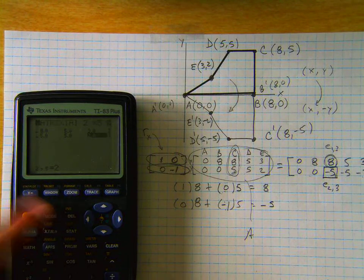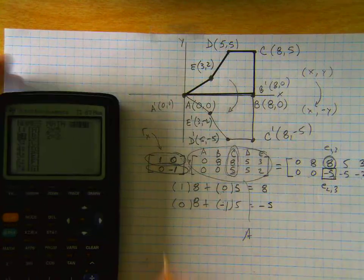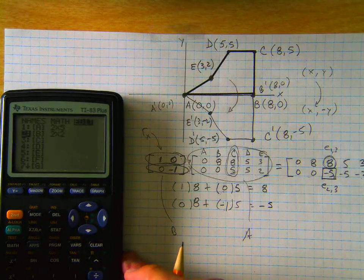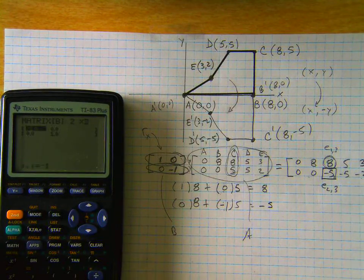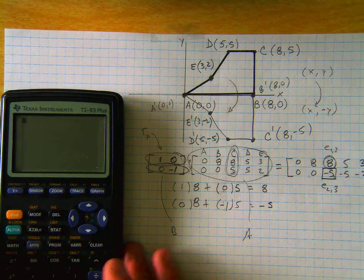And then I'm going to go into matrix and edit matrix B. Our reflection over the x-axis is going to be matrix B, and we want 1, 0, 0, negative 1. Okay, quit out of there.